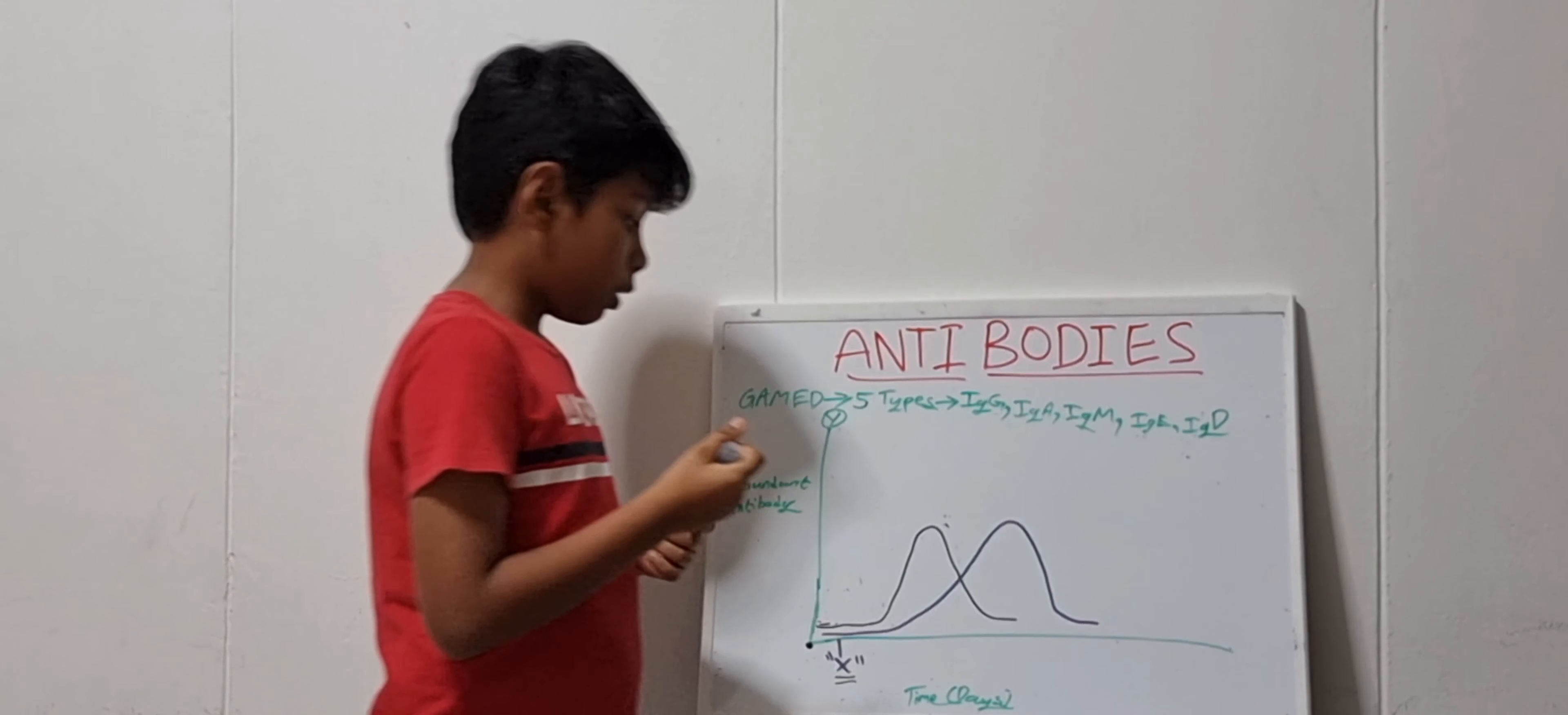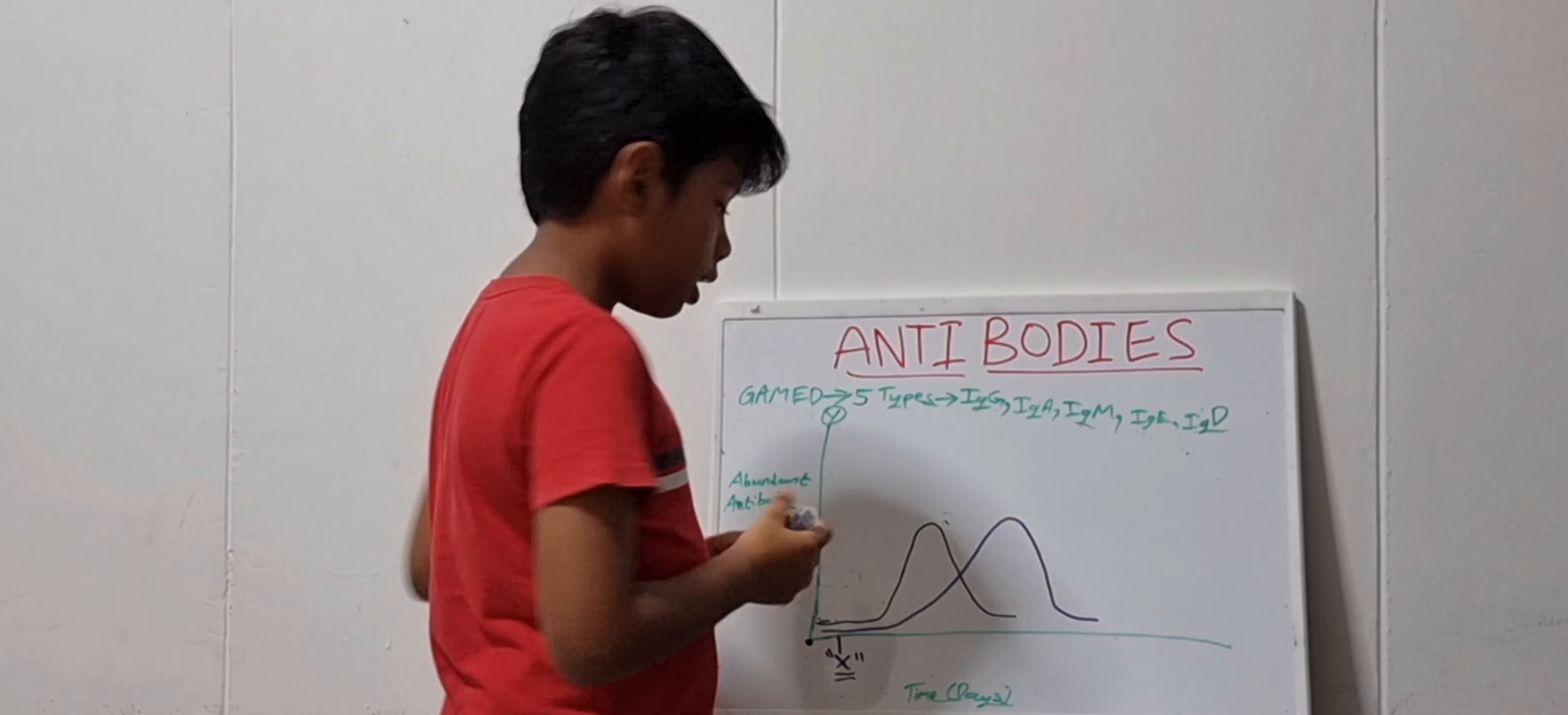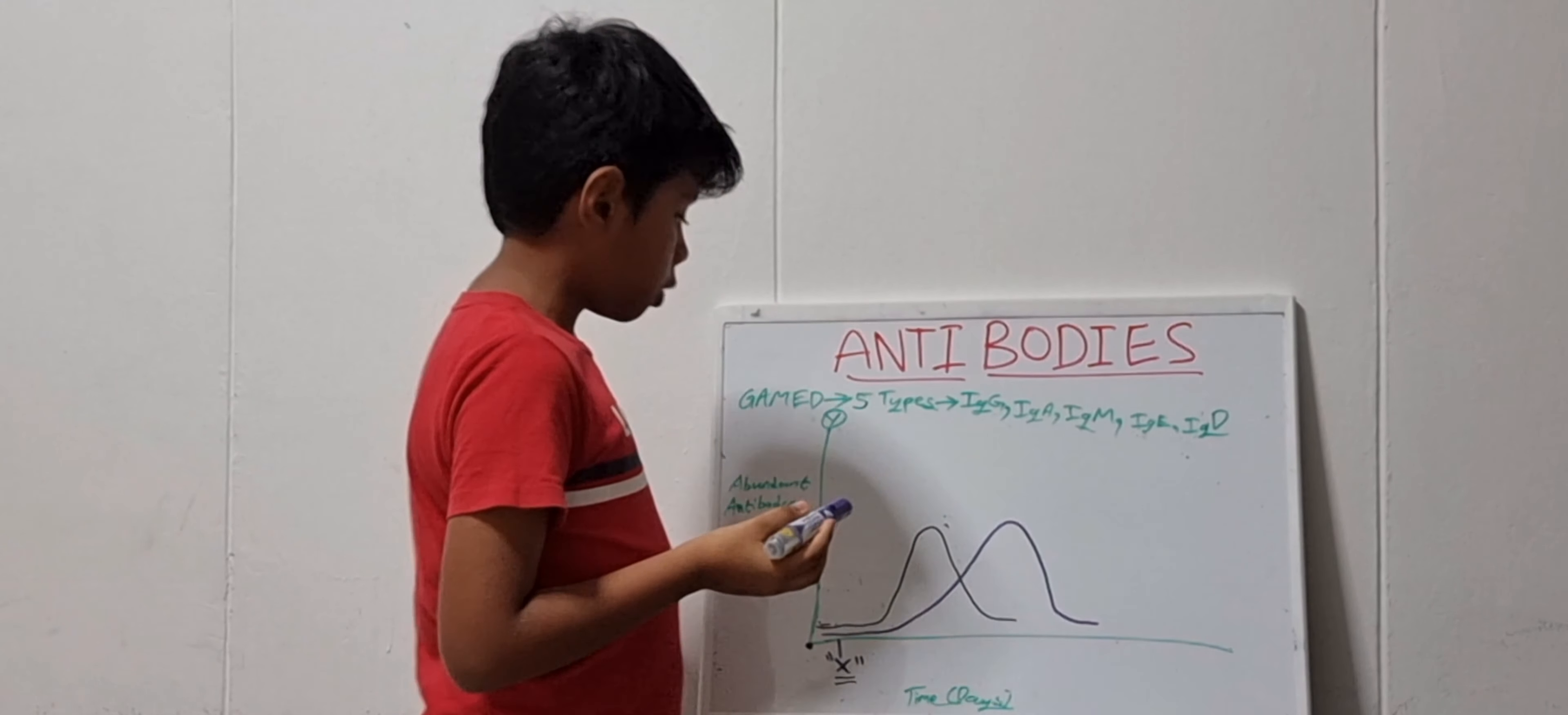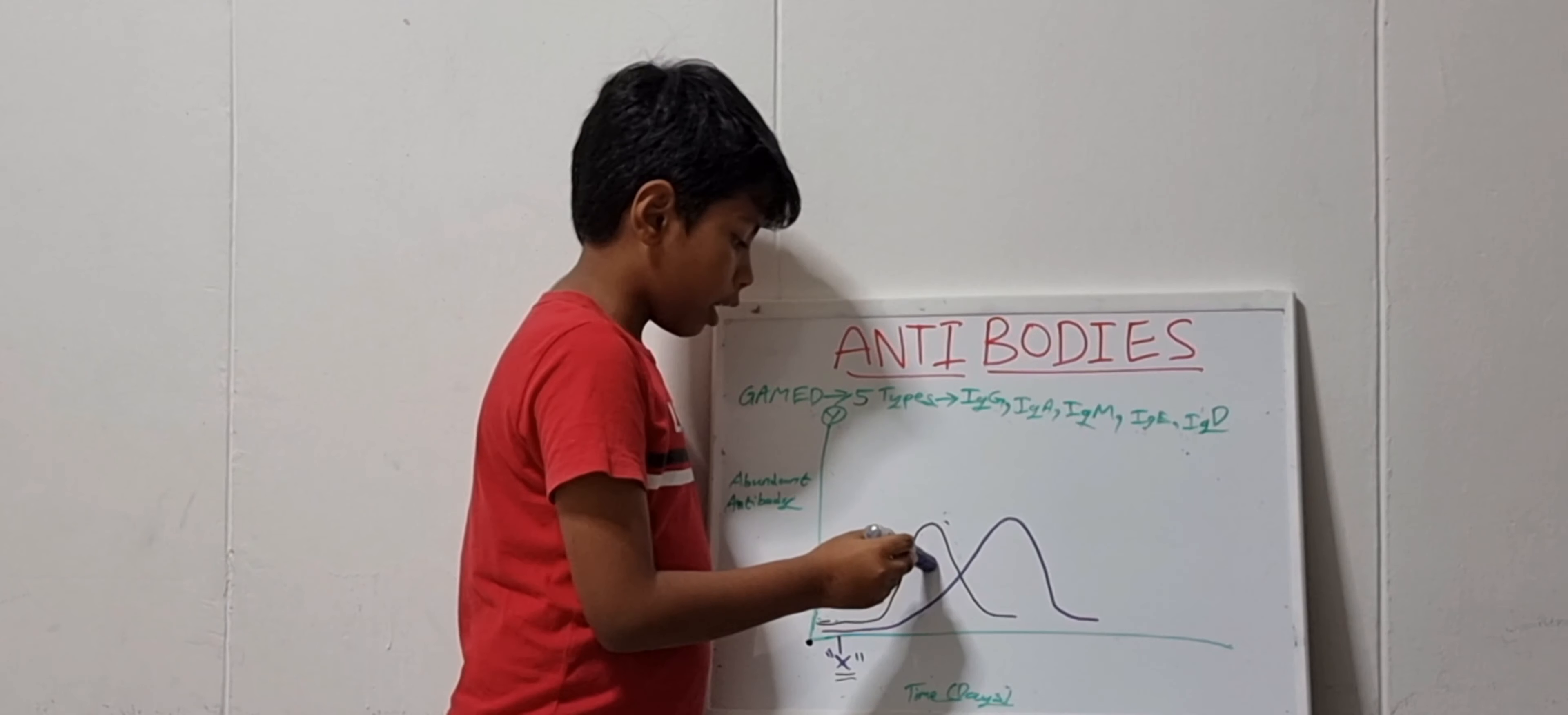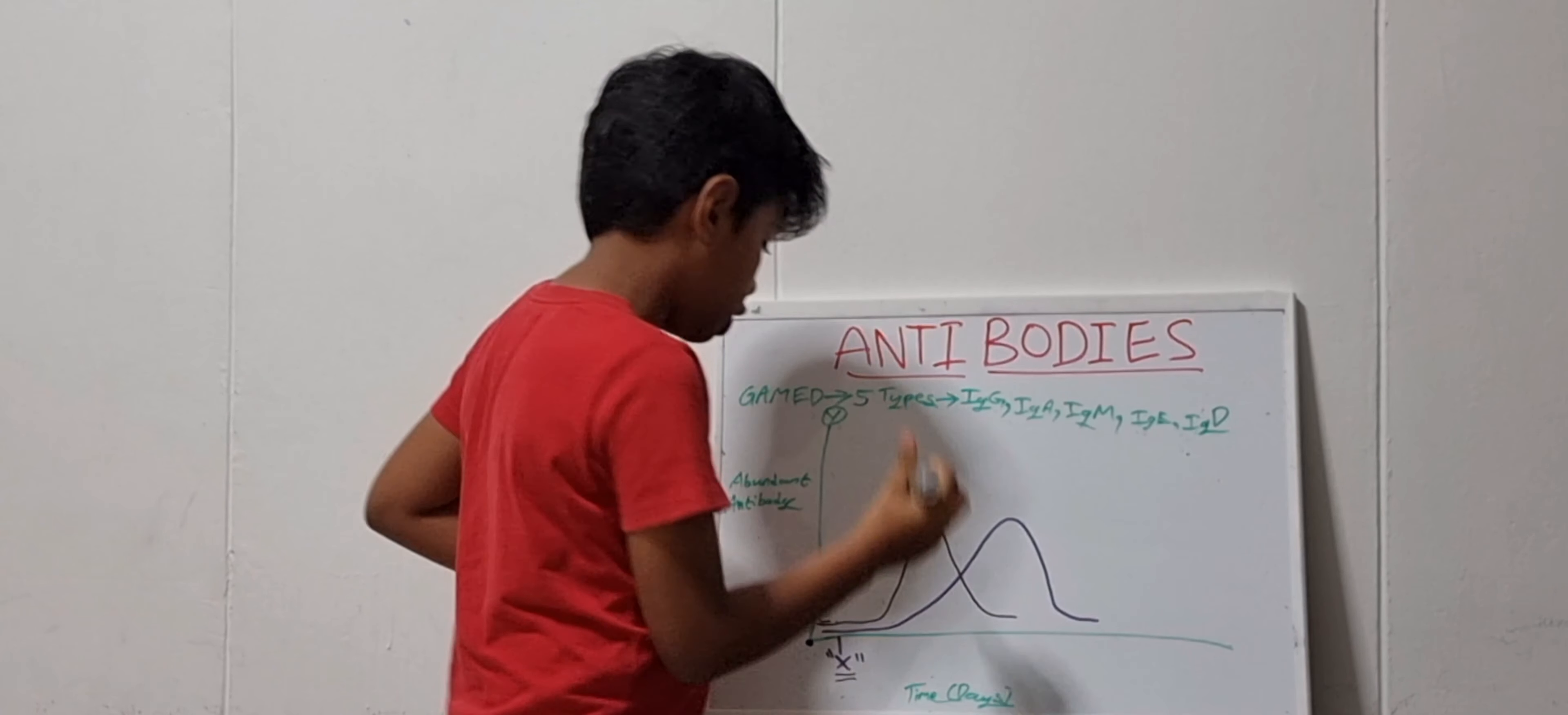So, this is what is called as the lag period. This lag period. In the lag period, the plasma cells have produced antibodies. The first antibody is IgM antibodies. IgM antibodies.